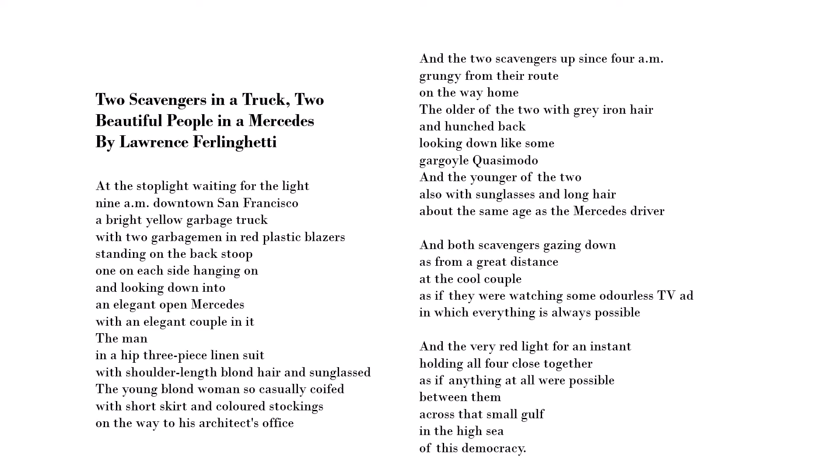Why he is doing that is the next important question, and we get that sense in the last stanza with the metaphor: 'as if anything at all were possible between them across that small gulf in the high sea of this democracy.' That gulf, that gap, is a metaphor for the gap between the wealthy and the poor in society — those societal divisions based on money, class, and occupation. So this poem is exploring how big those divides are by really obviously juxtaposing the different qualities of life for the two different sides.